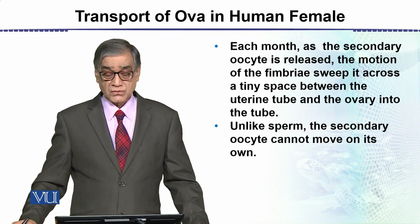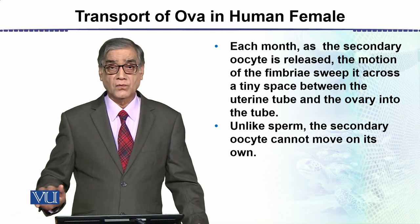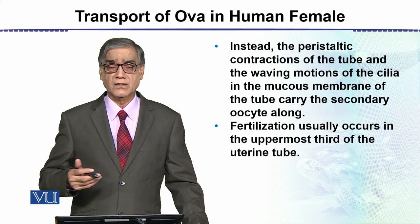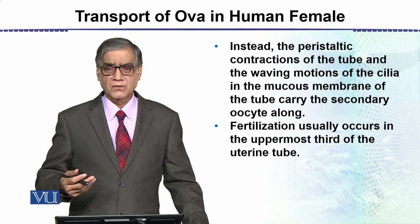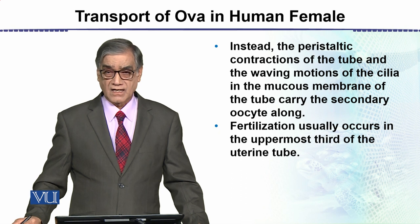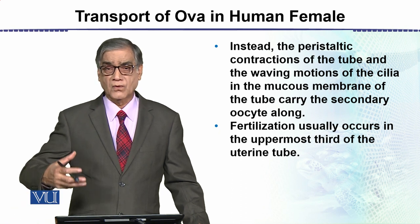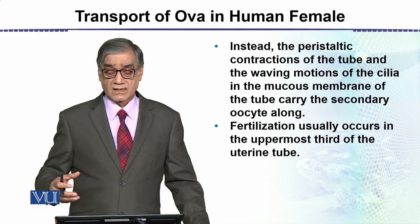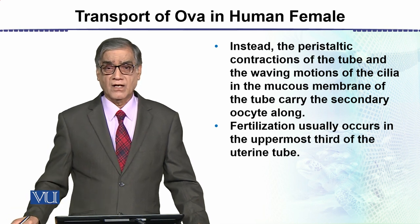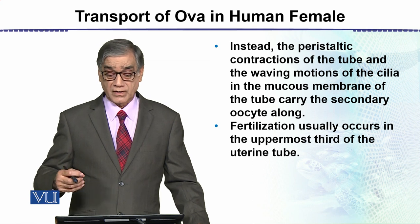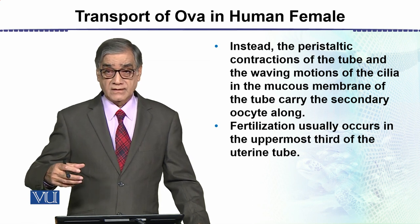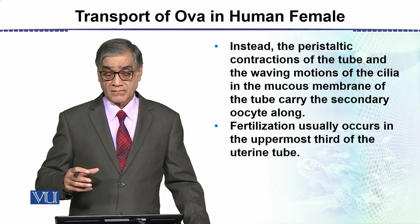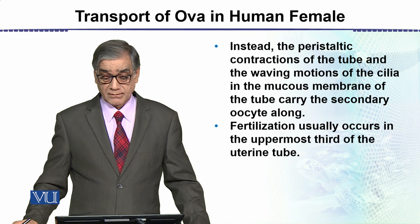Unlike sperms, the secondary oocyte cannot move on its own — کیونکہ اس پر کوئی cilia نہیں ہوتے یا flagella نہیں ہوتے۔ اس کی movement all by the contractions of the uterine tube ہے — جیسے ہم peristaltic movements بھی کہہ سکتے ہیں۔ There are wave-like motions جو کہ اس egg کو push کرتے ہیں۔